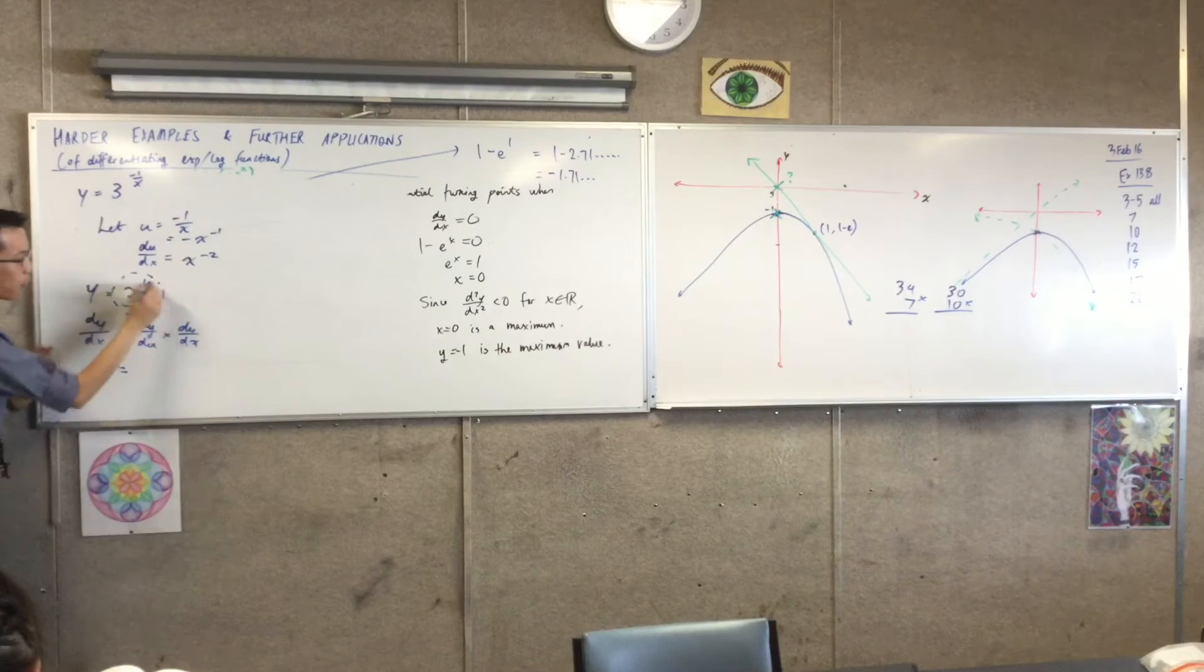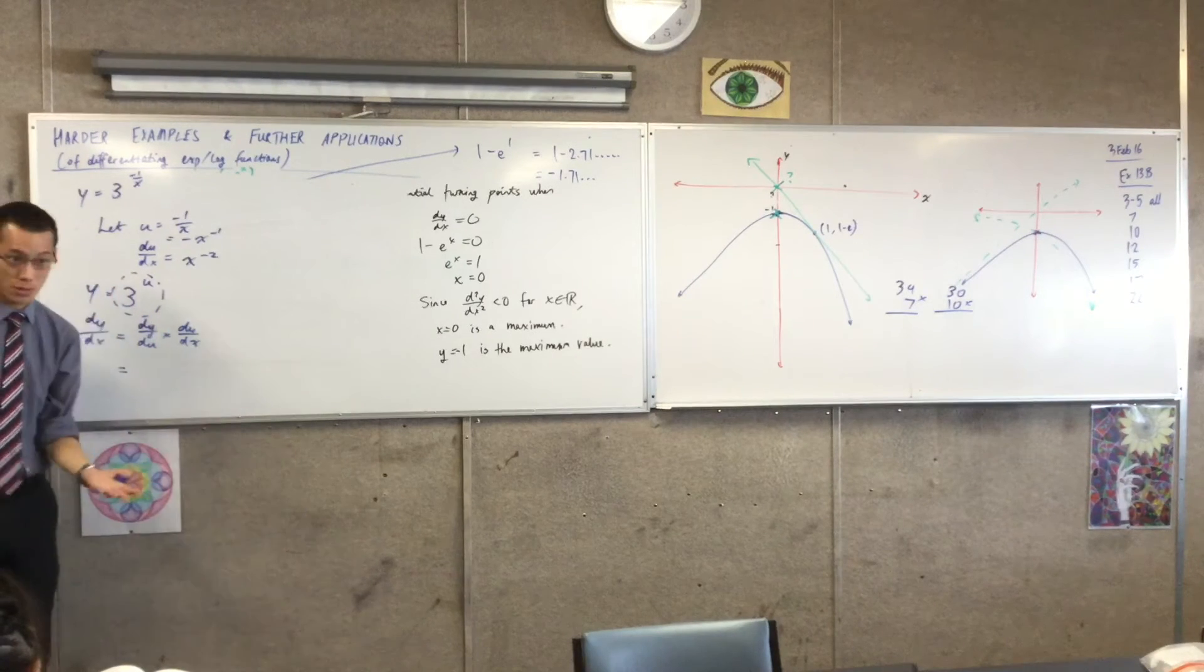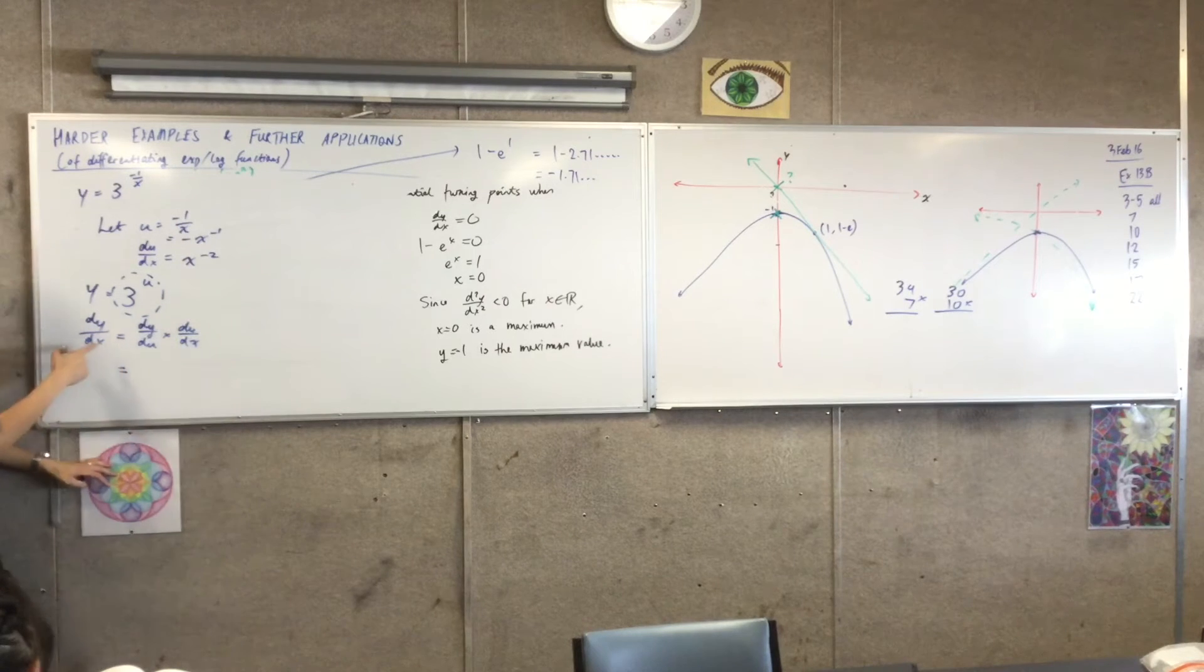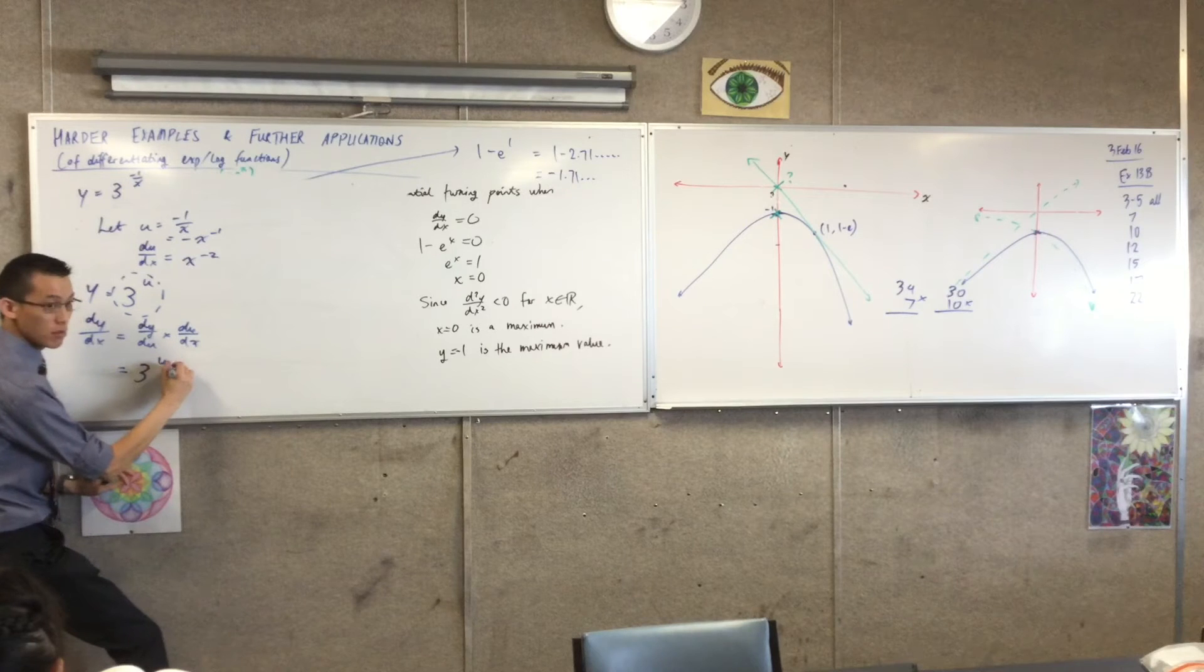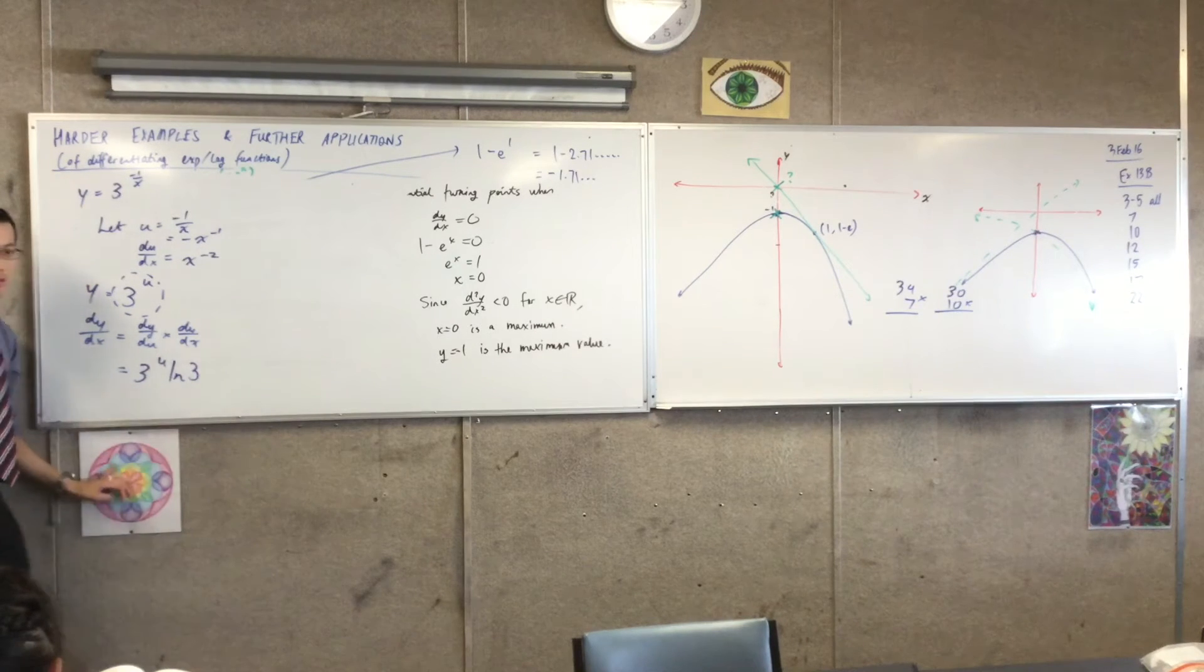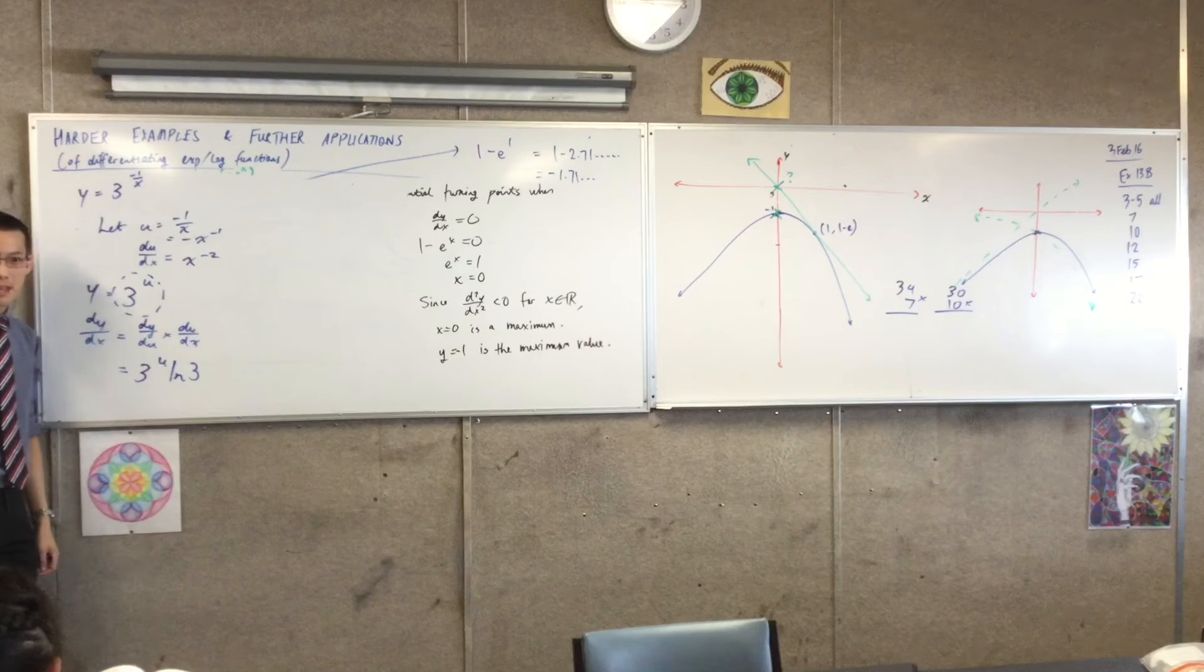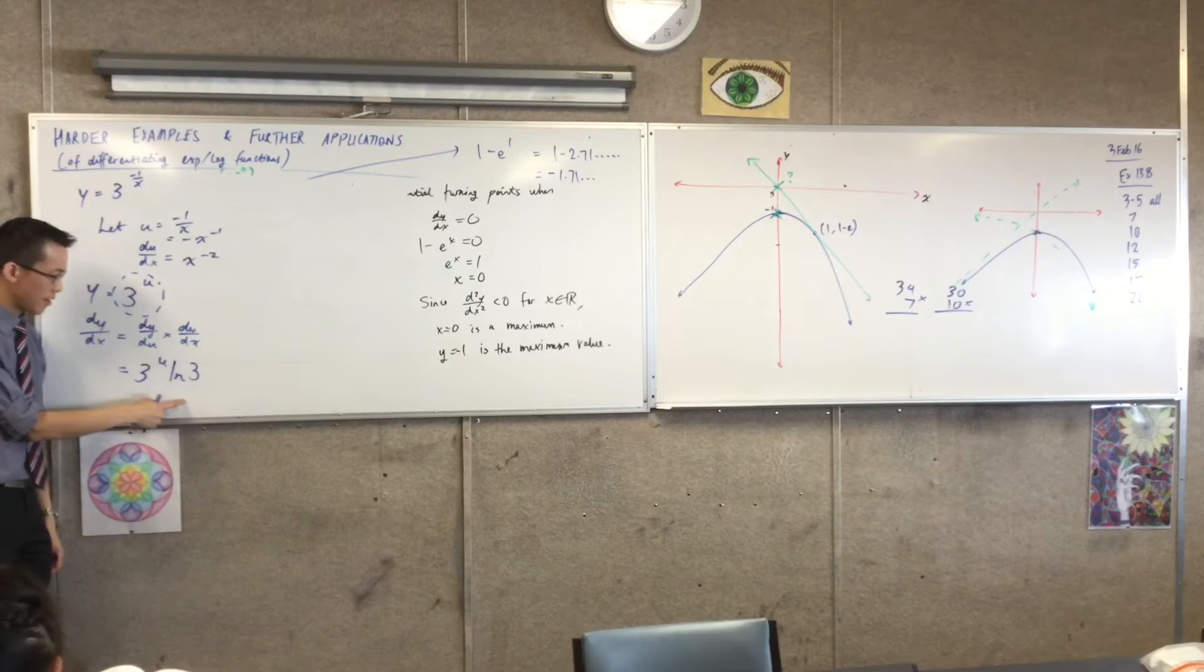Okay, dy/du, that's just this guy. So the whole point of doing the substitution is now that looks uncluttered, and it's very easy. I can just quote the result I already know, right? So this, in fact, is 3 to the u log 3, right? Okay, this is one of those bases where it's not e, so that's why this log term comes along for the ride.